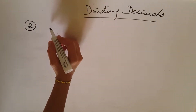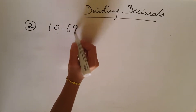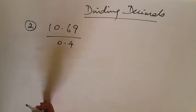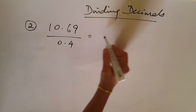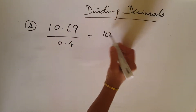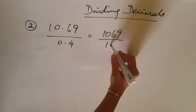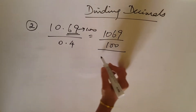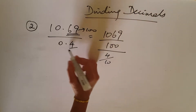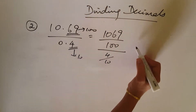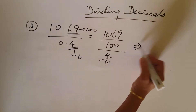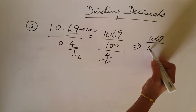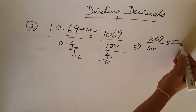Next question: 10.69 divided by 0.4. Using the fraction method: 10.69 is at the 100th digit, so write 1069 over 100. The divisor 0.4 is at the 10th digit, so write 4 over 10. This gives 1069 over 100 multiplied by 10 over 4.